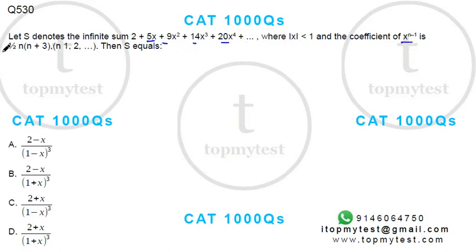Coefficient of x to the power n minus 1 is given as this. What is the value of s? Now, I know this is the value of s. If I multiply with x, s into x, because it is a smaller number,